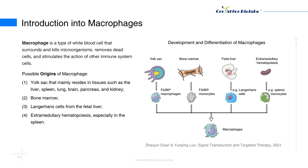Based on studies from mouse models, macrophages may have at least four origins. Some macrophages are from the yolk sac that mainly resides in tissues such as the liver, spleen, lung, brain, pancreas, and kidney. Some macrophages are derived from bone marrow and go through a maturation process. Langerhans cells are from the fetal liver. A few studies have also claimed that a minority of tumor-associated macrophages may come from extramedullary hematopoiesis, especially in the spleen.